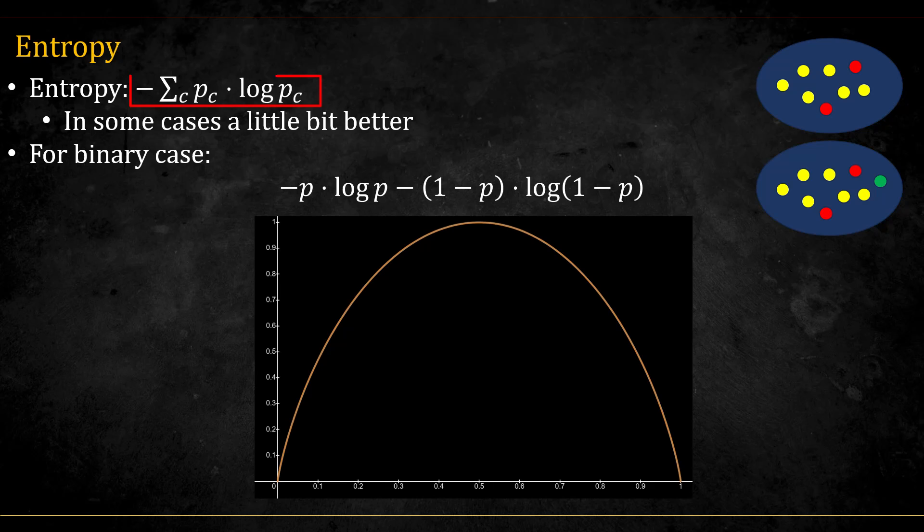The entropy is defined like this. It is sometimes a bit better than the genie, creating trees that are a bit more accurate or fit the data a bit better. But the difference is usually not that substantial, and it's usually a bit slower due to the need to compute the log. In the binary case, this is reduced to this. And you can see from the graph that it's very similar to the genie.